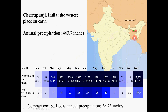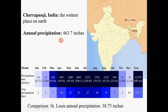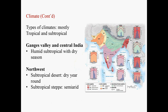This particular place, Cherrapunji in India, is on record as the wettest place on Earth. The annual precipitation is 463.7 inches. In comparison, our local annual precipitation is only 38.75 inches — less than 10% of the precipitation of Cherrapunji in India.